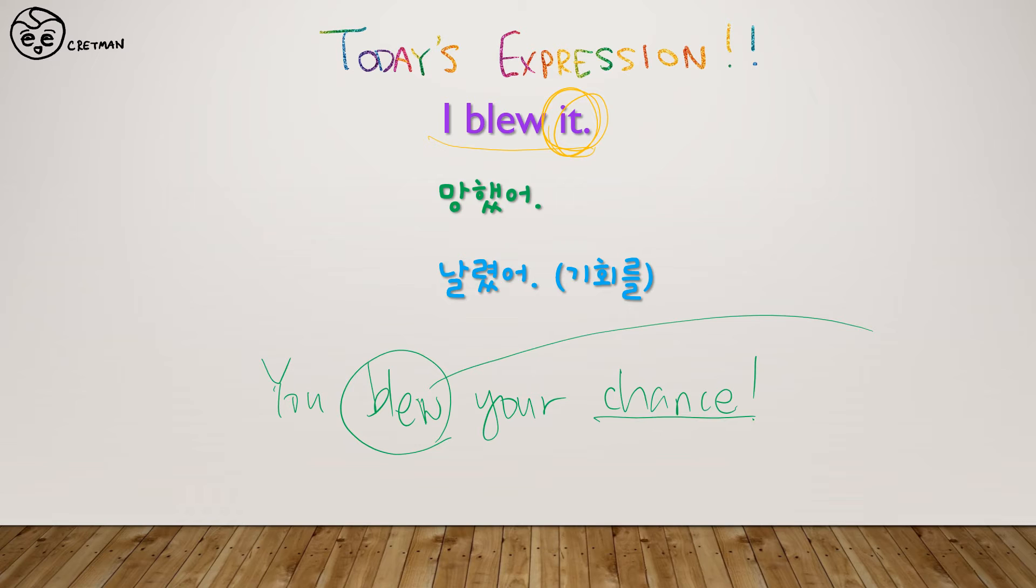No. You blew it. 아니야. 너 이제 기회 놓쳤어. 날렸어. 그렇게도 사용이 가능하고 아까 인터뷰처럼 나 망했어. 뭐 아니면 시험. I blew it. 뭐 이렇게 얘기할 수가 있다라는 겁니다.